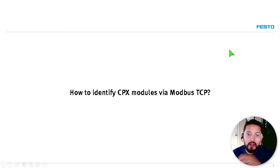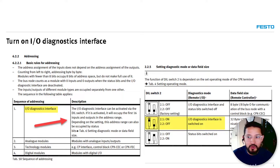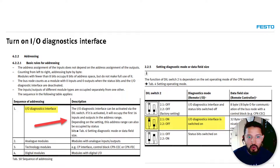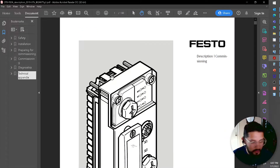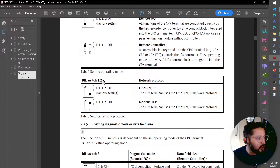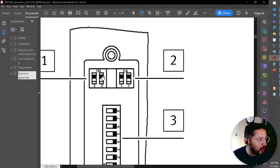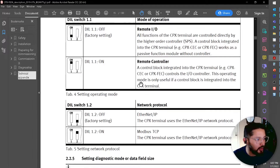We're going to need a couple of documents. The first thing to do is set up the FV36 module for Modbus TCP. In the user manual, under the DL switch configuration, DL switch 1.2 controls this: if it's on, it's Modbus TCP; if it's off, it's EtherNet/IP. I already have that set up.